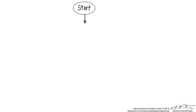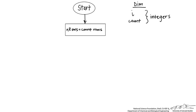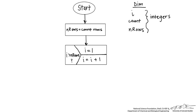The first step is to draw a flowchart. We start by listing the things we need to dim: an index i and a count — both integers. The next step is to count the number of rows in our selection, so we have another variable, nRows, also an integer. We count the number of rows, then we enter into the for-next loop.